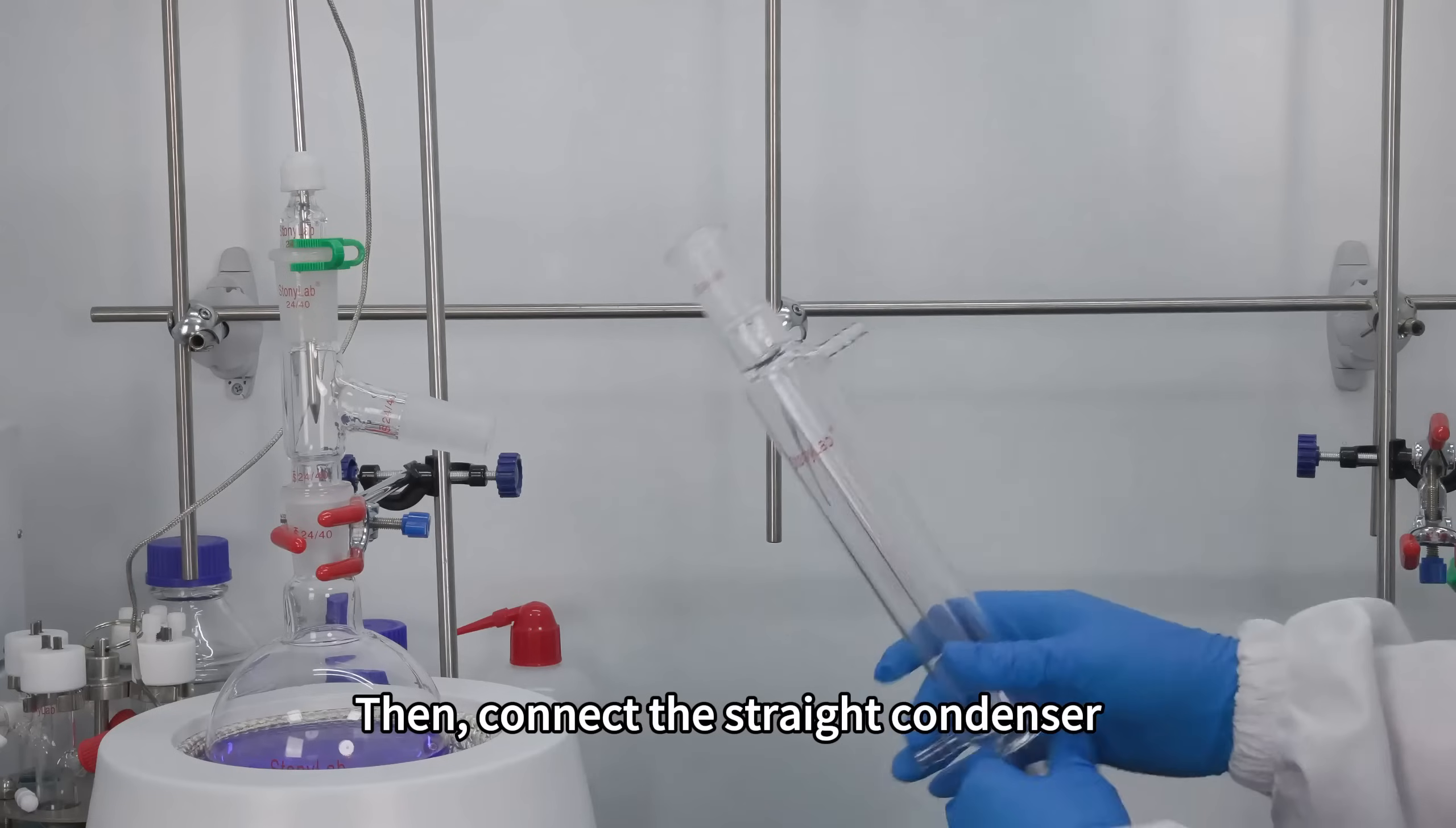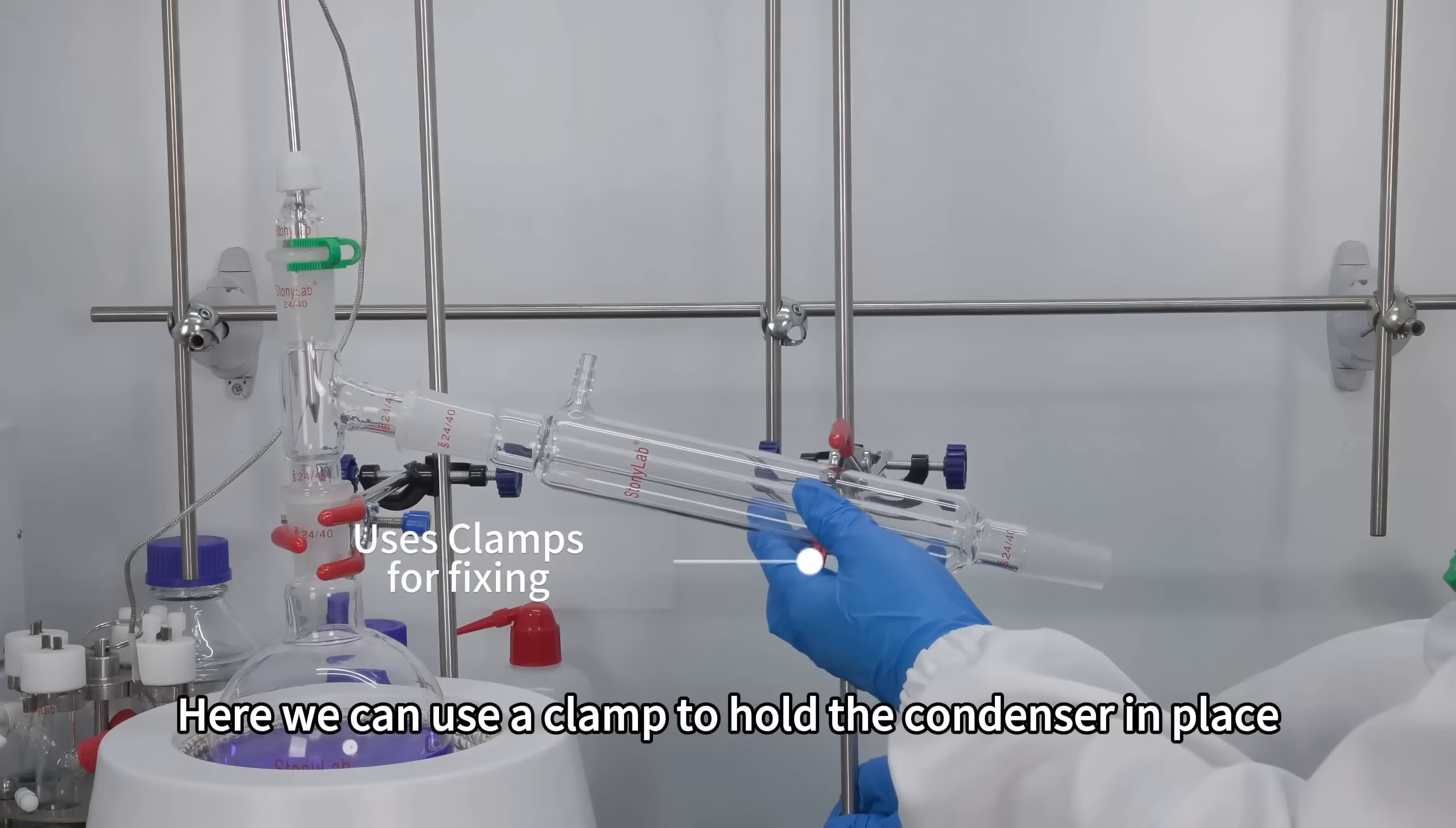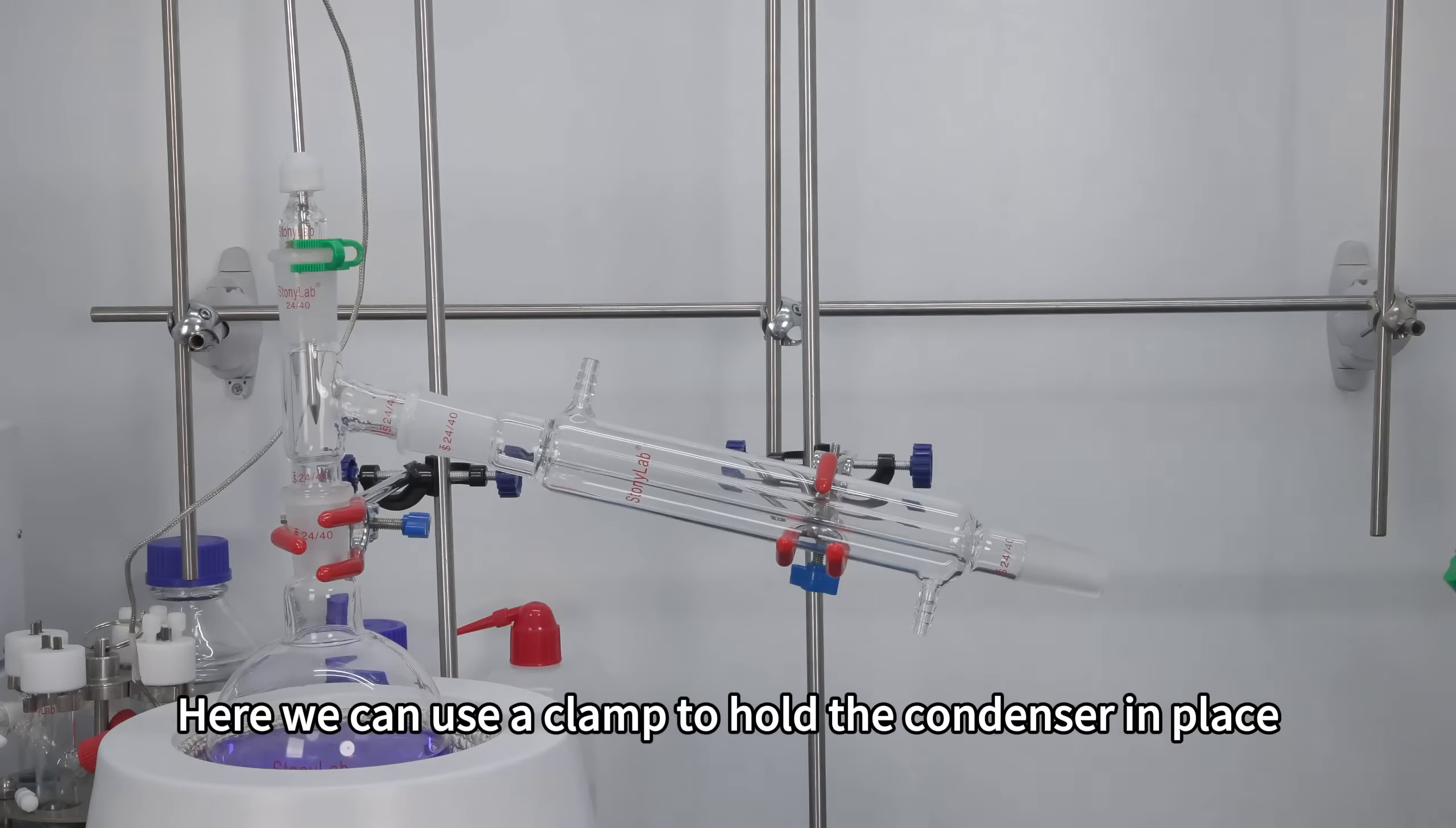Then, connect the straight condenser to the outlet end of the distillation head. Here we can use a clamp to hold the condenser in place.